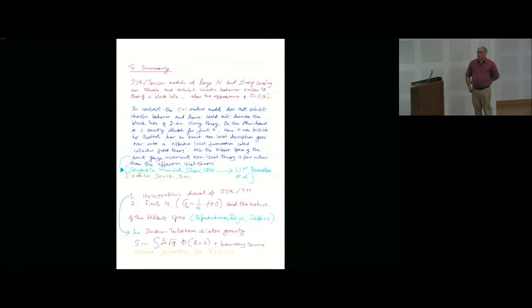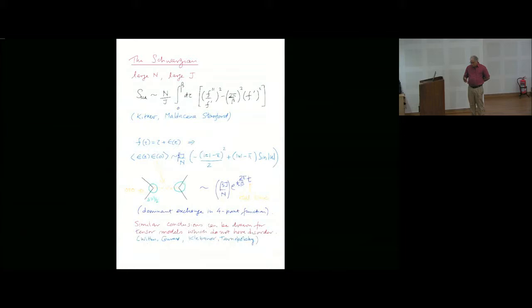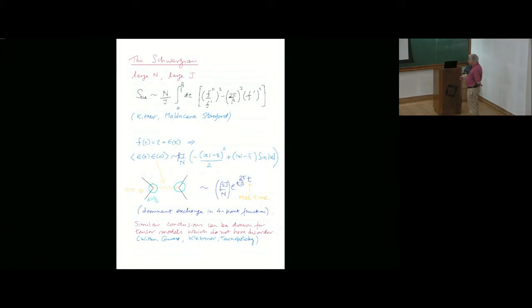The holographic dual now. The talk will be about that. There is a Jackiw-Teitelbaum theory of a dilaton field which simply multiplies the scalar curvature plus the negative cosmological constant. Only allowed geometries in this theory are essentially R equal to minus R. Only those geometries allowed. Maldacena and Stanford and Yang have discussed this simple model in great detail and they have been able to reproduce this action from the geometry, from the geometrical point of view.